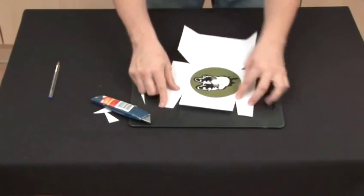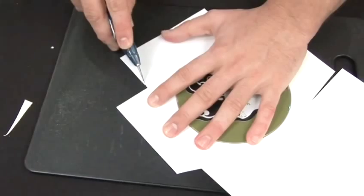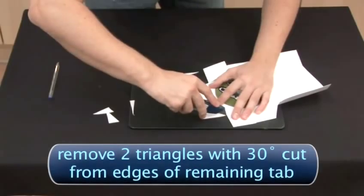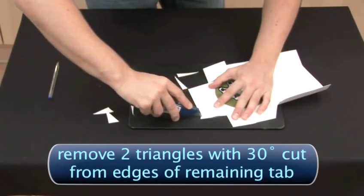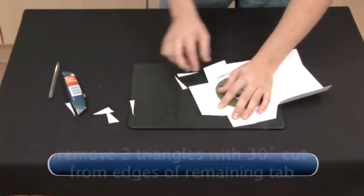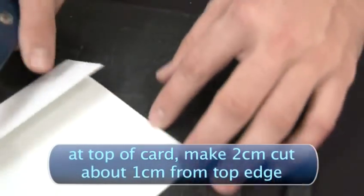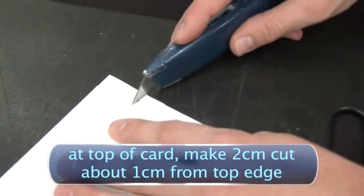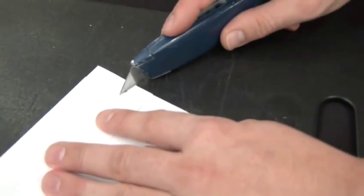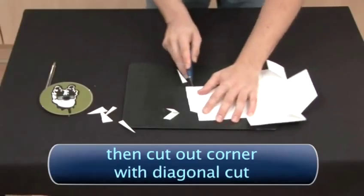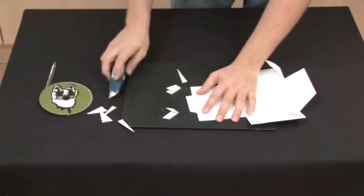Then fold the two small tabs up. Remove two small triangles with a 30 degree cut from the edges of the remaining bottom tab. At the top of the card, make a 2cm cut about 1cm from the top edge, followed by cutting out the corner with a diagonal cut. Repeat this on the opposite side.